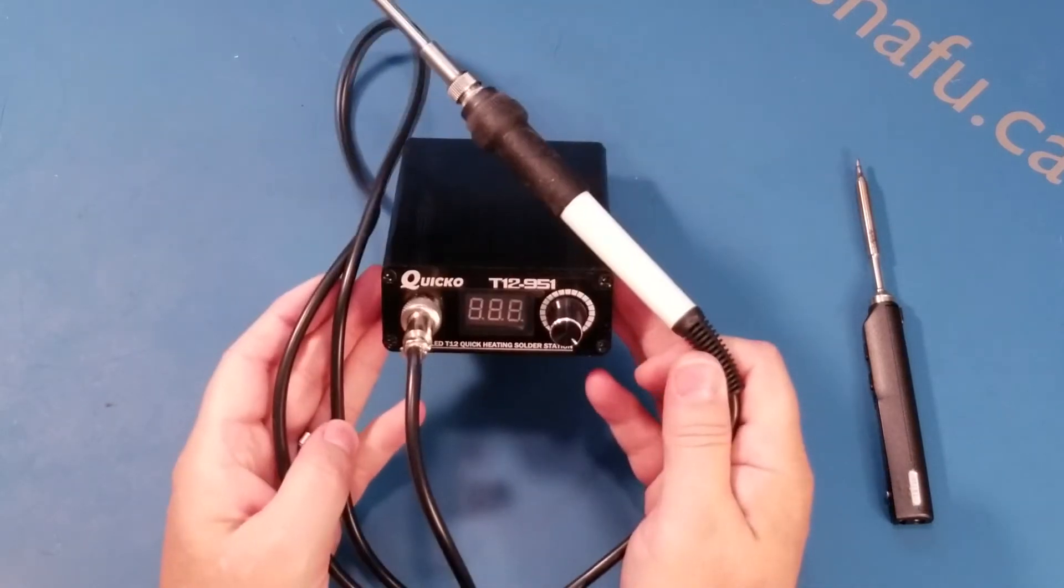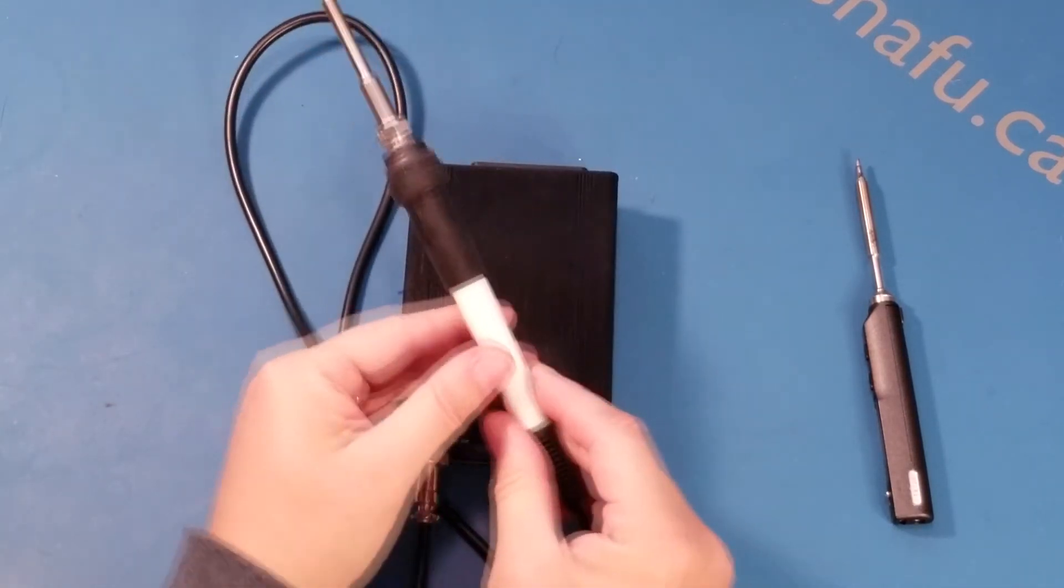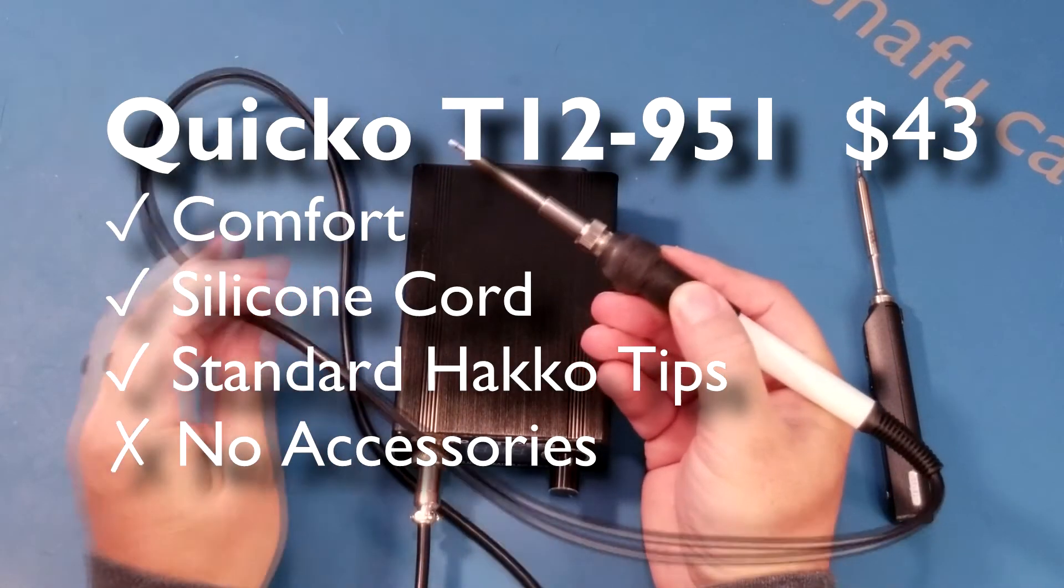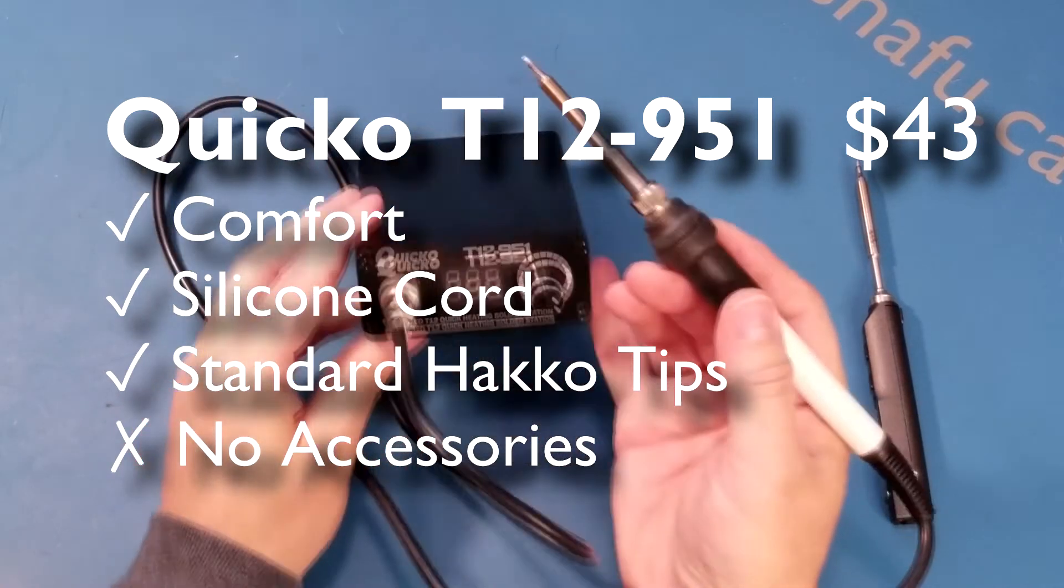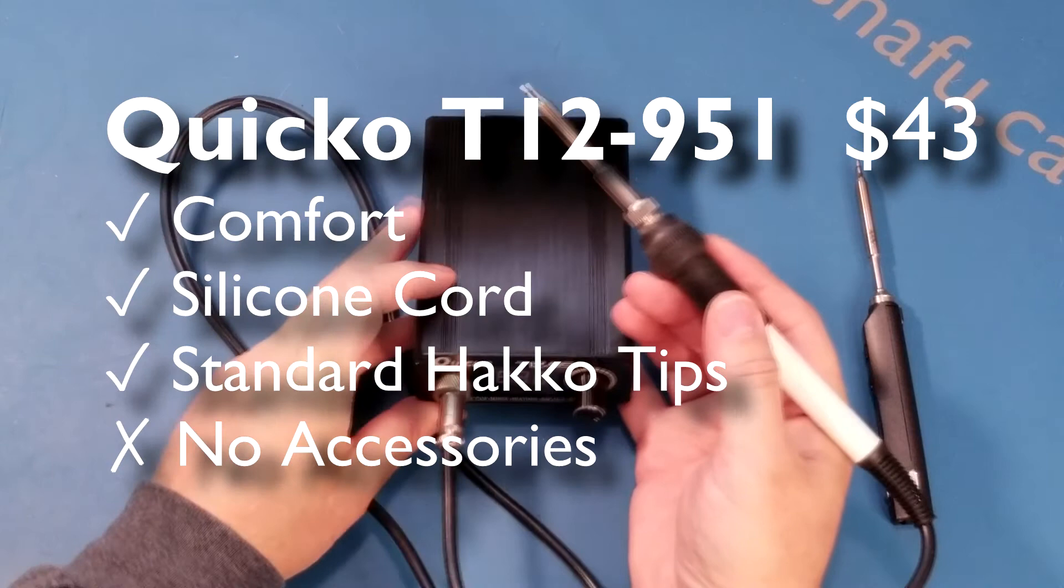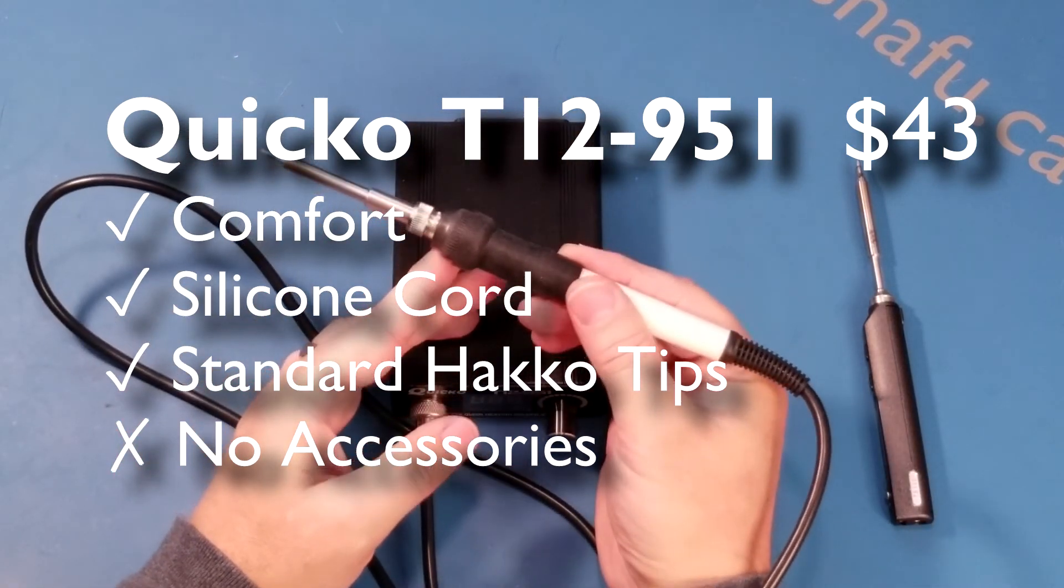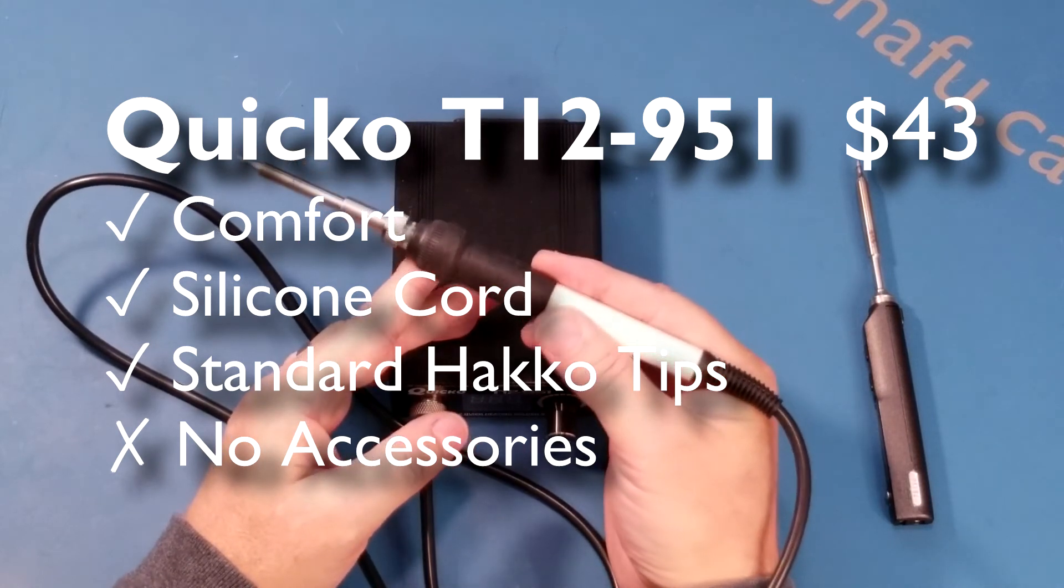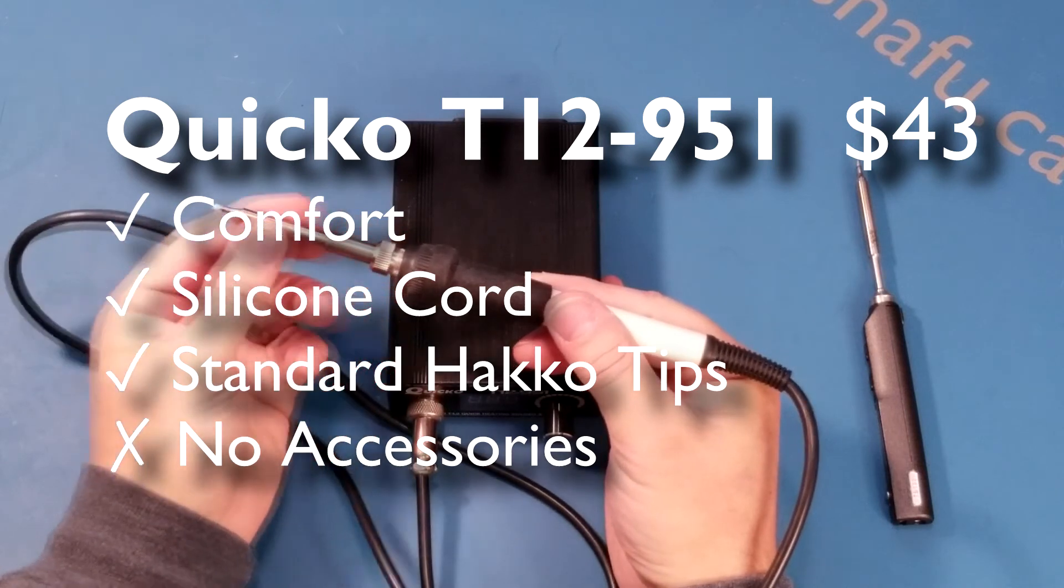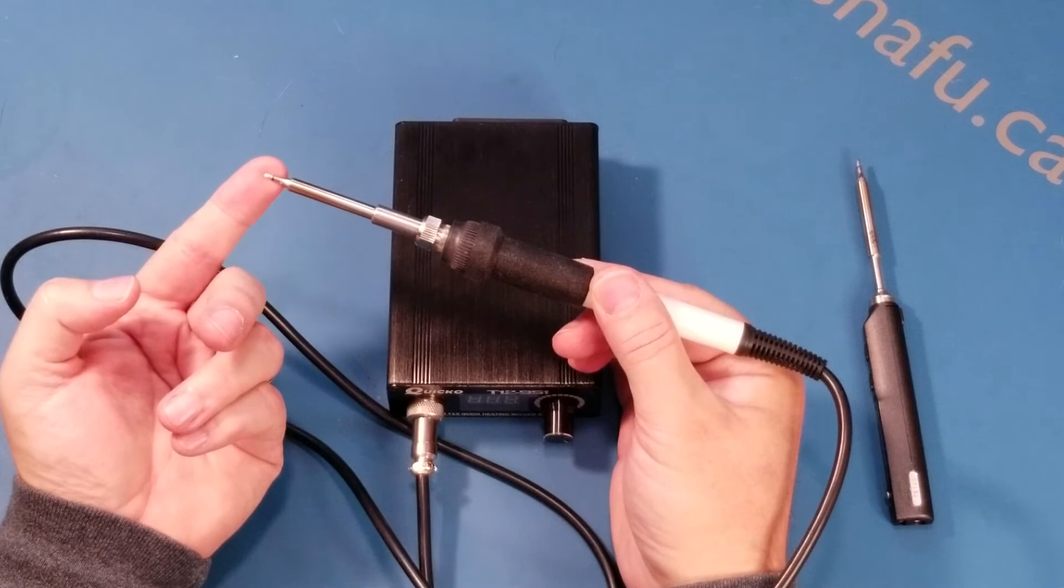Second, the Quikko T12951. I like a lot of things about this. It doesn't quite have the capacity of a Weller or a Hakko. But it's very comfortable in the hand. It has a nice flexible silicone cord. It has a base unit that you can stick away on your bench and see what's going on. I think that this probably is the best of the bunch with respect to being a general purpose iron. And the only question of quality here is the tips. And because it's a standard T12 tip, you could replace it with a Hakko T12 tip.